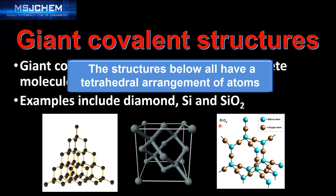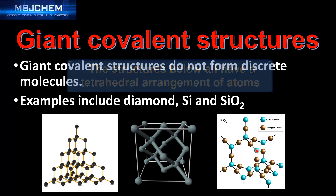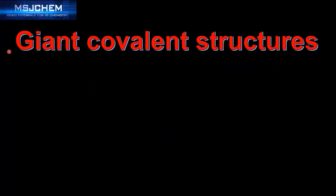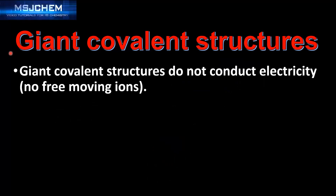If we look at the structure of silicon dioxide, which is SiO2, you can see that each silicon atom is bonded to 4 oxygen atoms and each oxygen atom is bonded to 2 silicon atoms. Next we look at the properties of giant covalent structures.